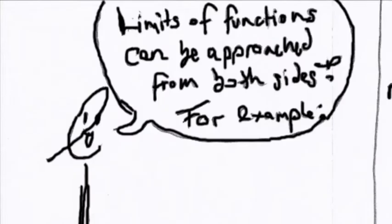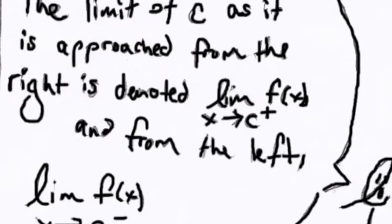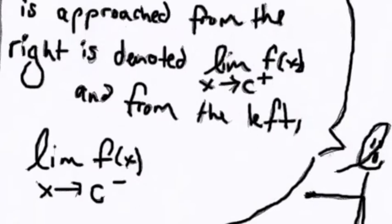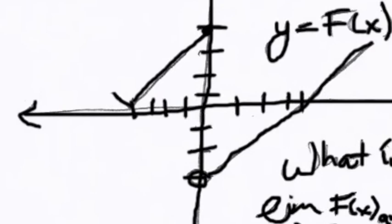Uh, 4, right? Yes, exactly. I guess that's pretty easy. Now we'll make it harder. Limits of functions can be approached from both sides, for example. The Limit of c, as it is approached from the right, is denoted Limit of x approaches c, positive f of x. From the left, Limit f of x as x approaches c, negative. What is the Limit of f of x as x approaches 0, negative, and Limit of f of x as x approaches 0, positive?